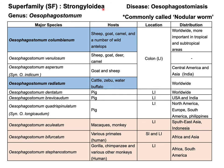Under the superfamily Strongyloidea, one of the important genera is Esophagostomum. The major species for sheep, goat, camel, and different antelopes is Esophagostomum columbianum. For sheep and goat there are two other important species: Esophagostomum venulosum and Esophagostomum asperum. For cattle and buffalo the important species is Esophagostomum radiatum, and for pig the important species include Esophagostomum dentatum and Esophagostomum quadrispinulatum. There are also species important for wild animals such as monkeys and other primates.